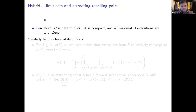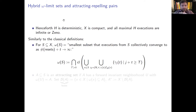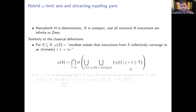Determinism is assumed: the flow set is disjoint from the guard set, implying forward uniqueness of executions. State space is assumed compact. Omega limit sets are defined analogously to the classical case — looking at tails of forward executions through a set, with both resets and continuous time counting as elapsed time. This ensures discrete-time systems are a special case.